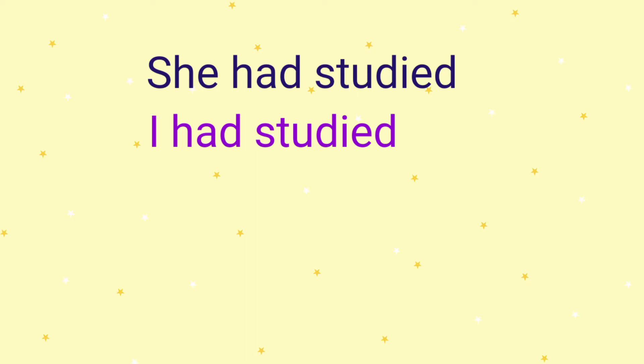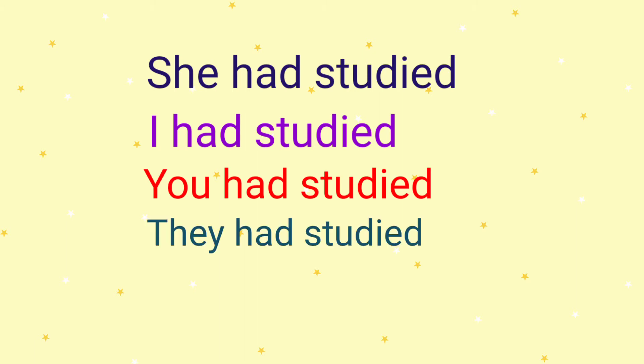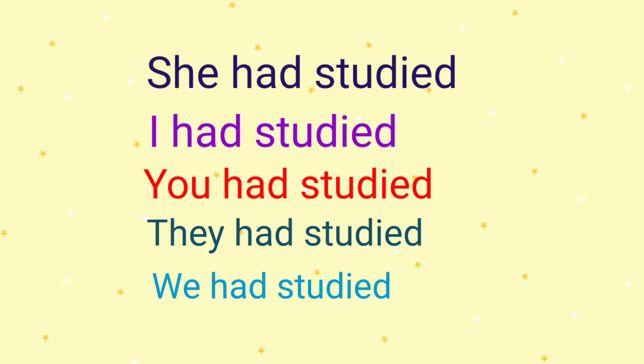So let's look at some examples. She had studied. I had studied. You had studied. They had studied. We had studied. So whether the subject is singular or plural, it is followed by the auxiliary 'had'. It doesn't matter whether it's singular or plural — that's one good thing about past perfect tense.